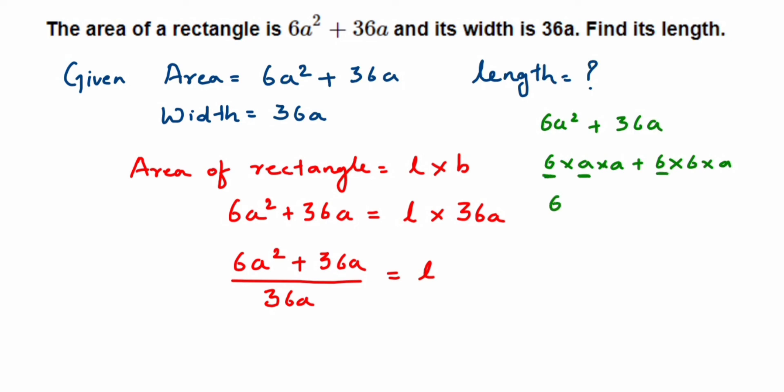Now if you compare here, we have one 6 and one 6 common—I'll take one 6 outside. One a and one a common—I'll take one a outside. Now what is left in the first term? This single a, write down that a. And here one single 6 is present, so plus 6. So this is how we got 6a(a + 6).